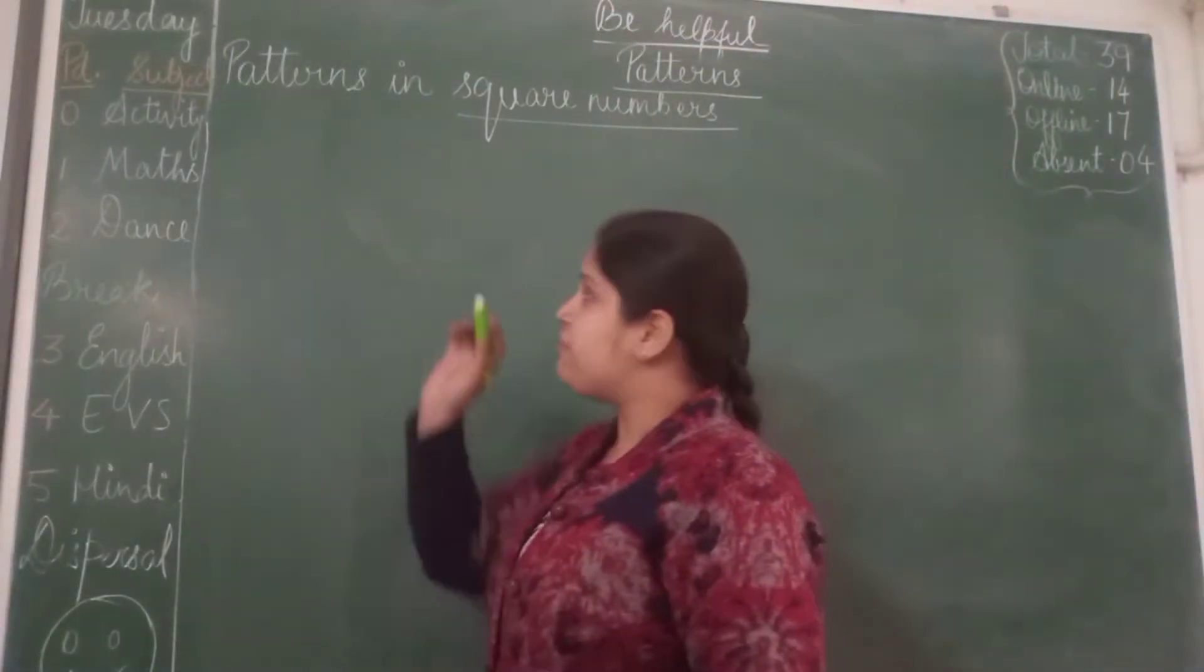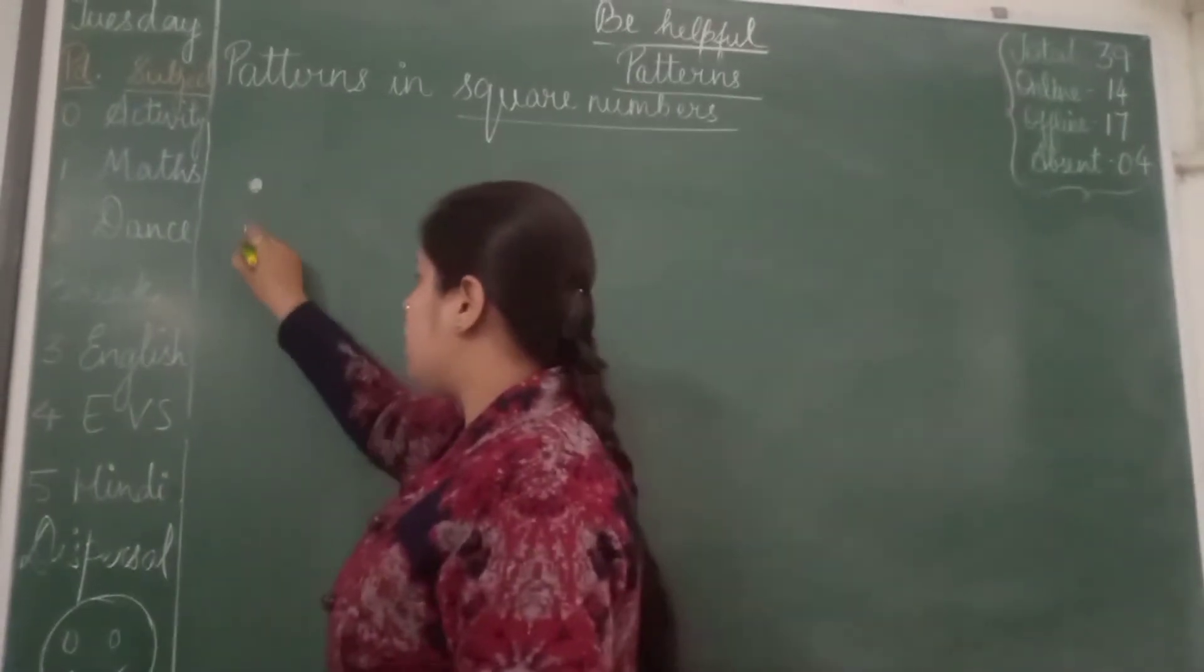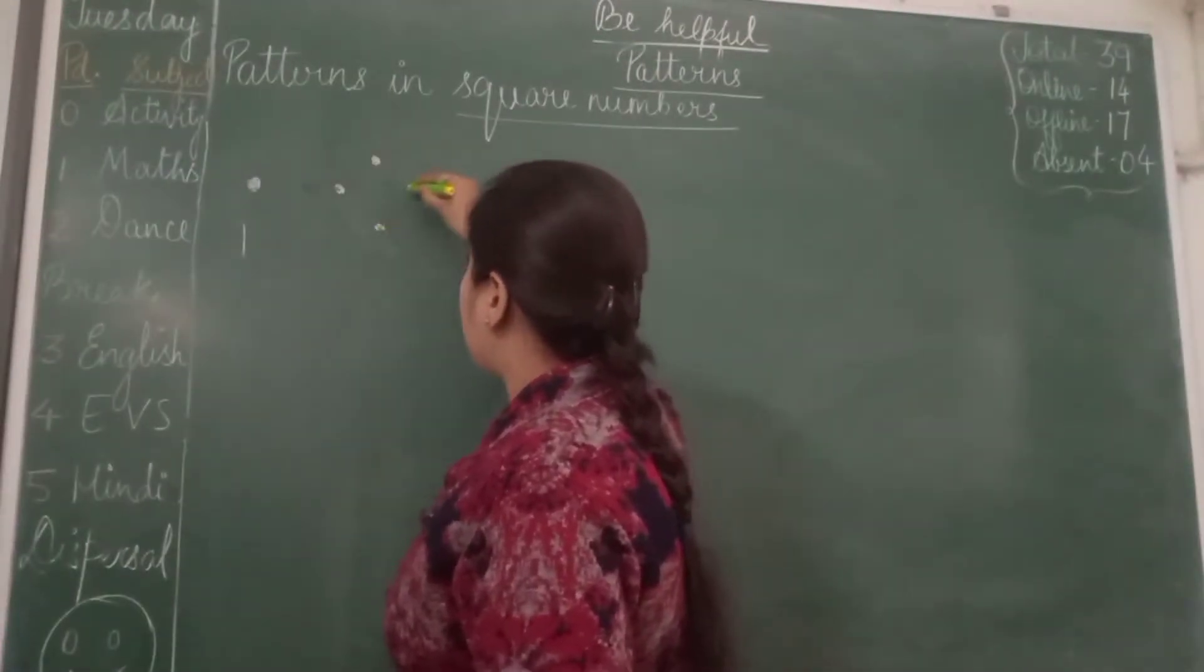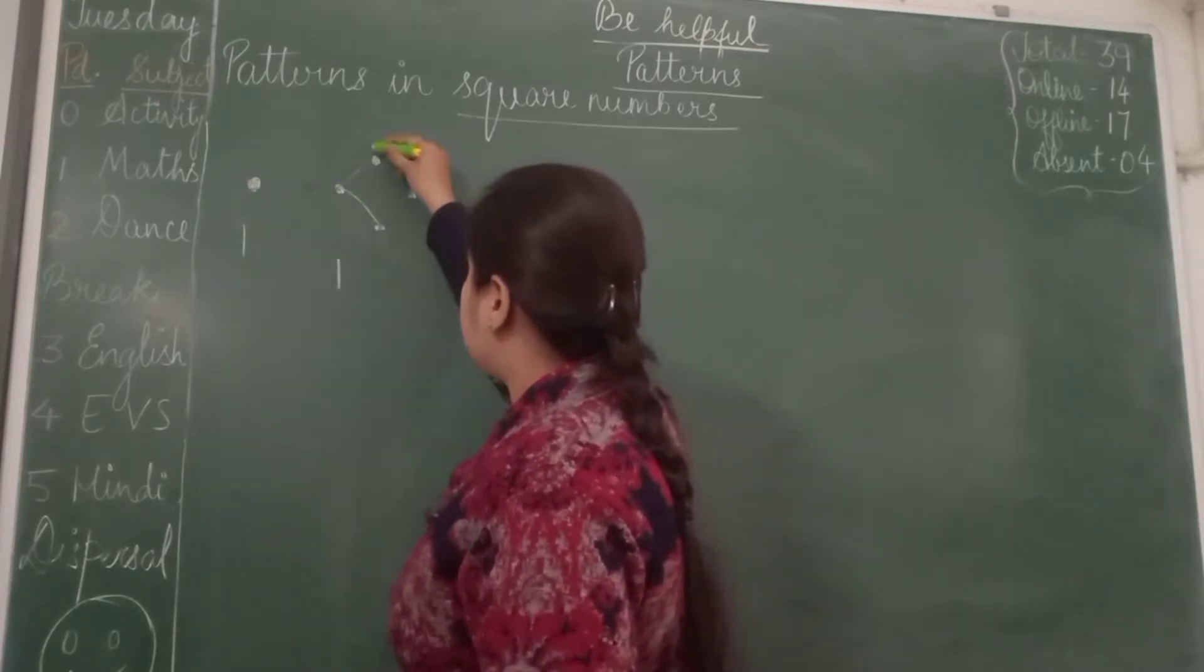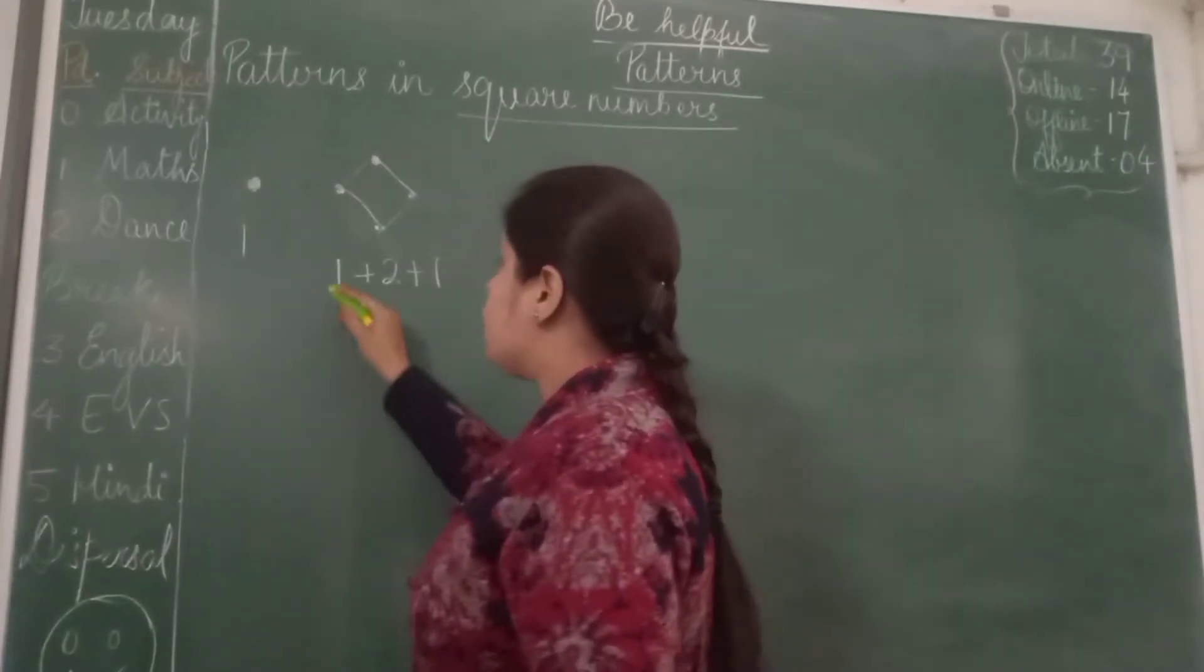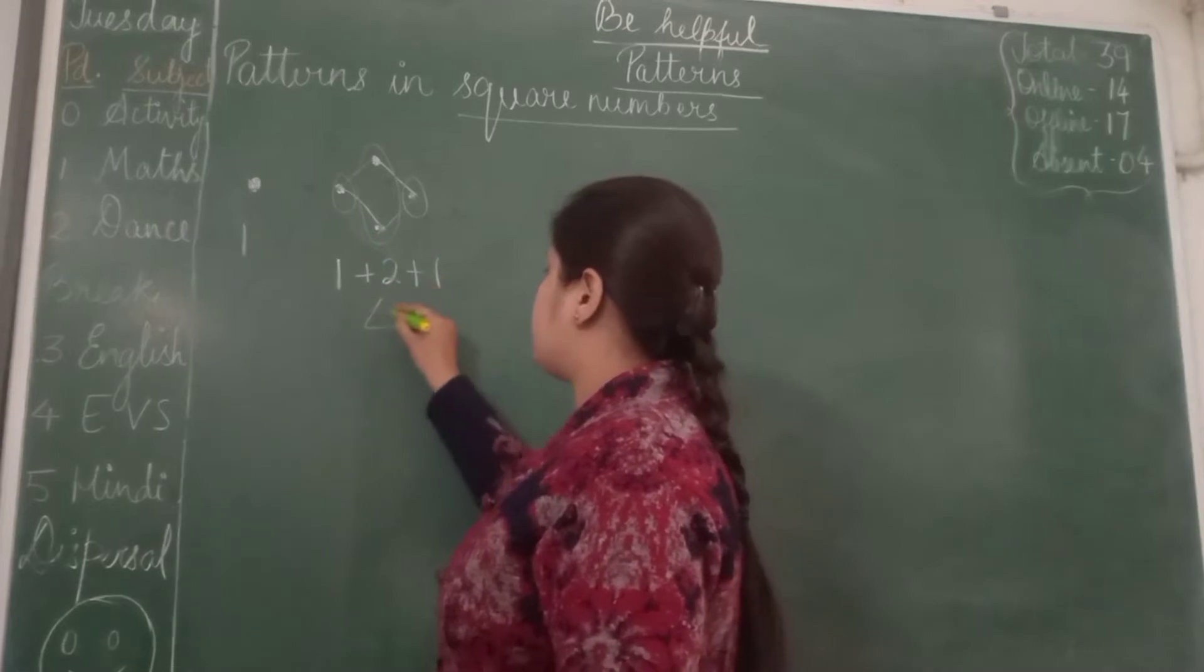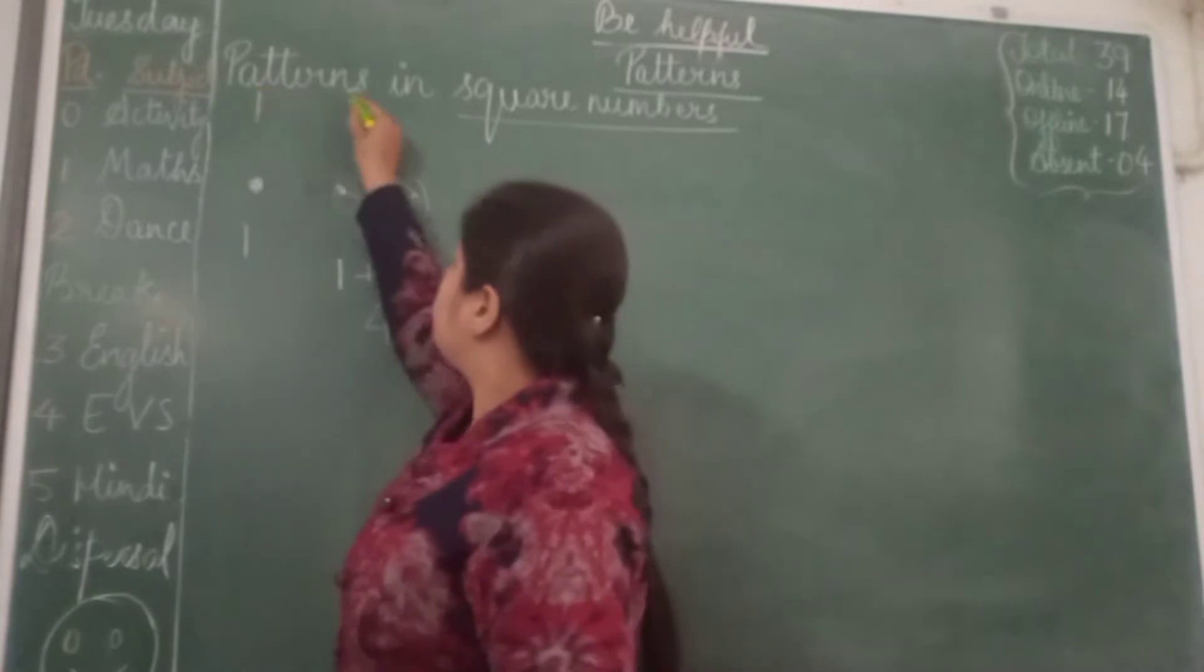So the very first pattern which I am going to discuss here is, this is 1 dot. Now we will be making a square: 1, 2 and 1. So we started with 1, then we reached to 2, and then again we reached to 1. So 1 plus 2 plus 1 which gives us 4. So this is the square number of 2.